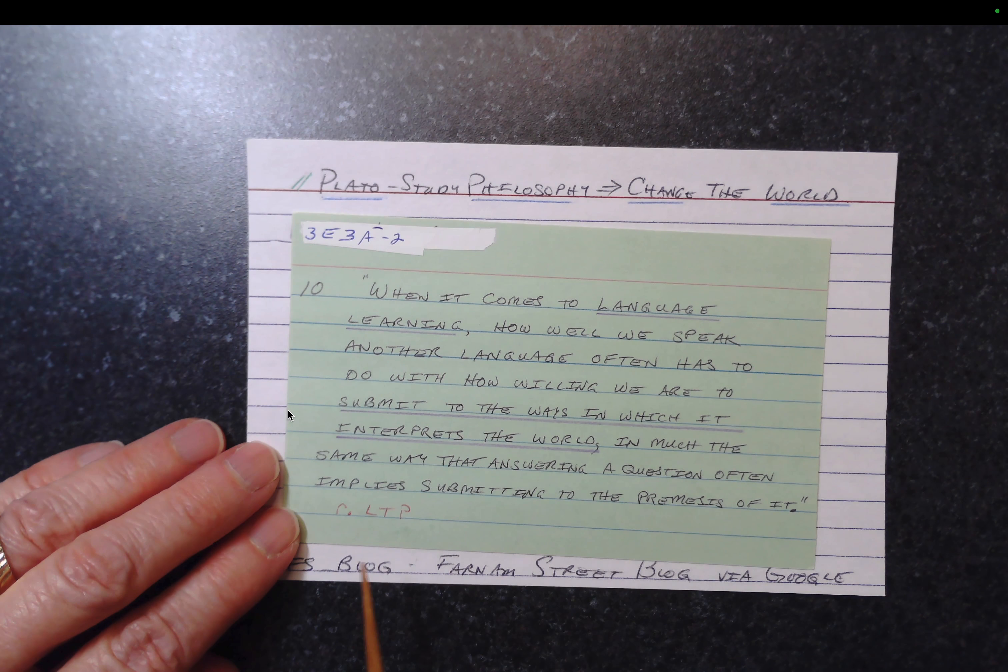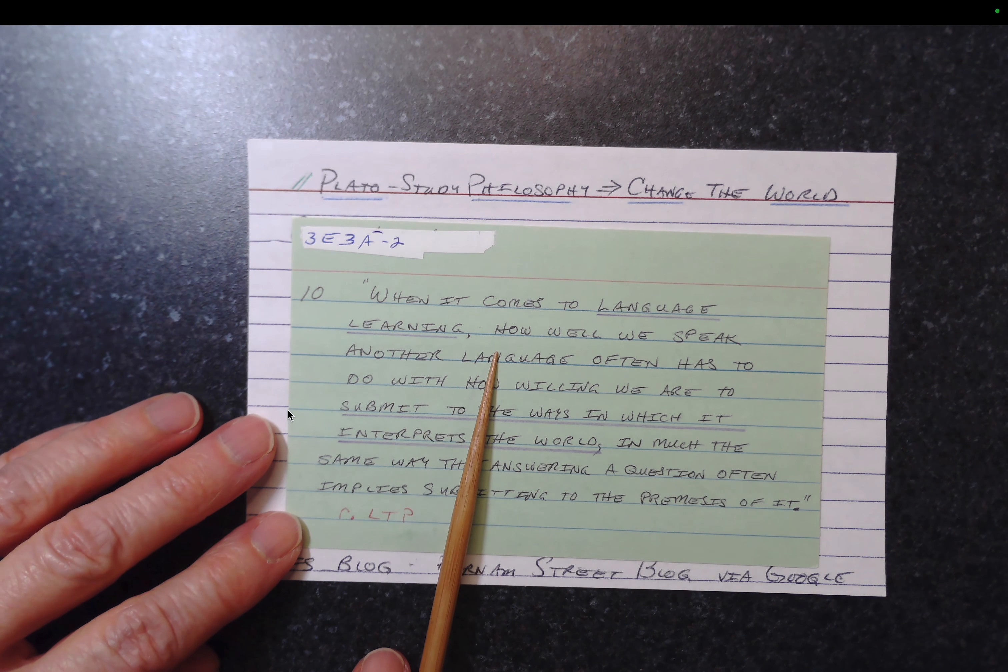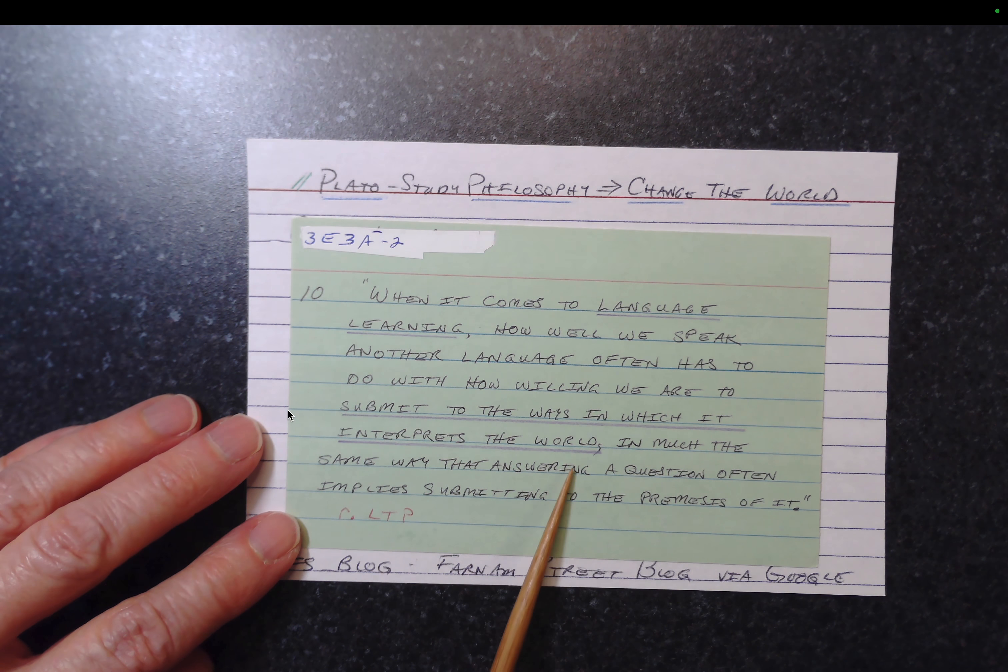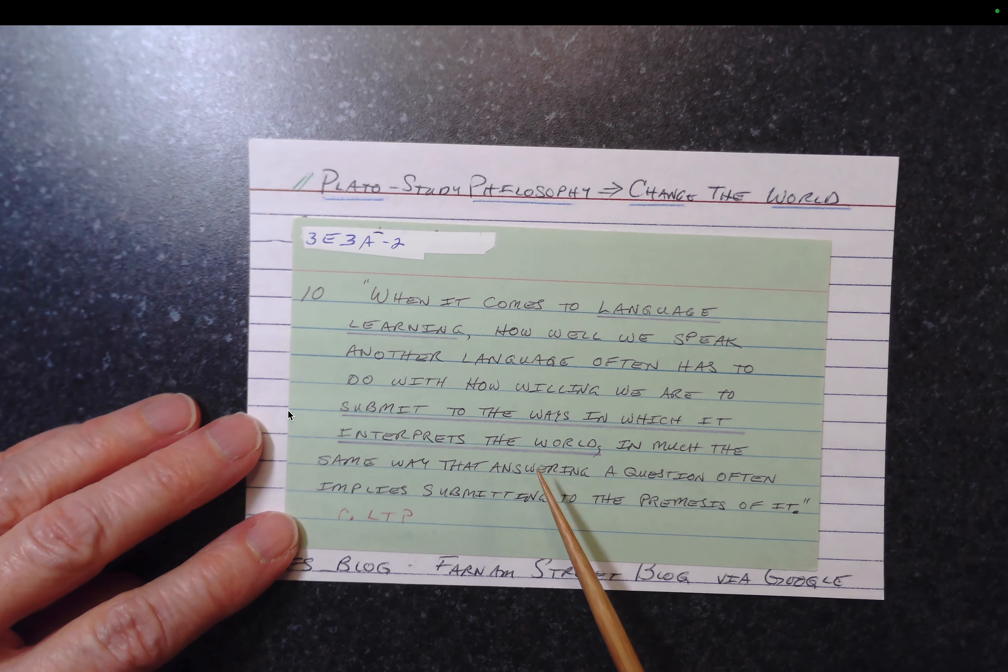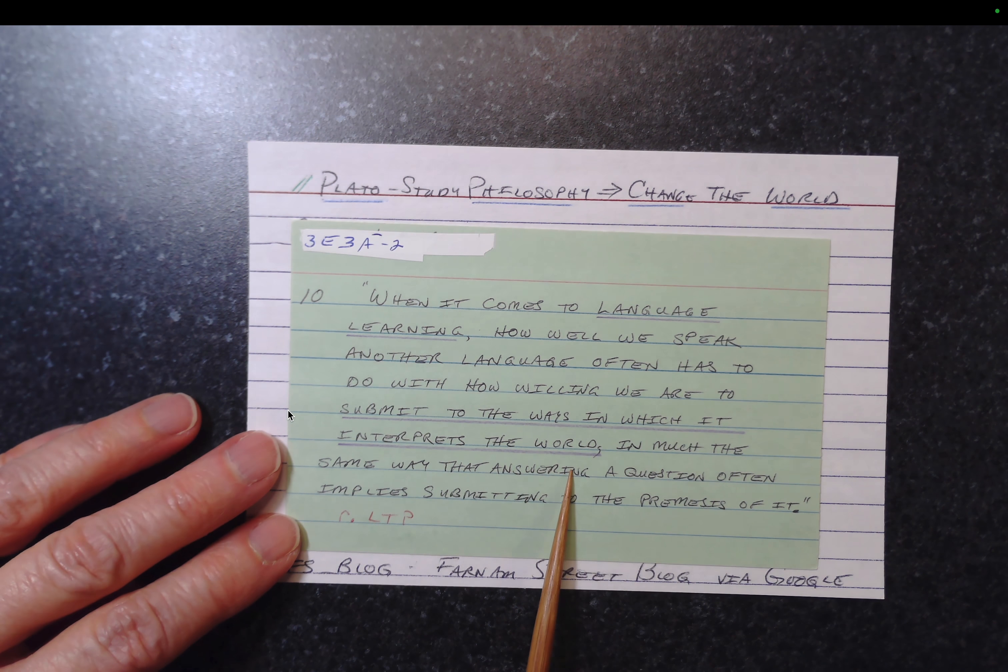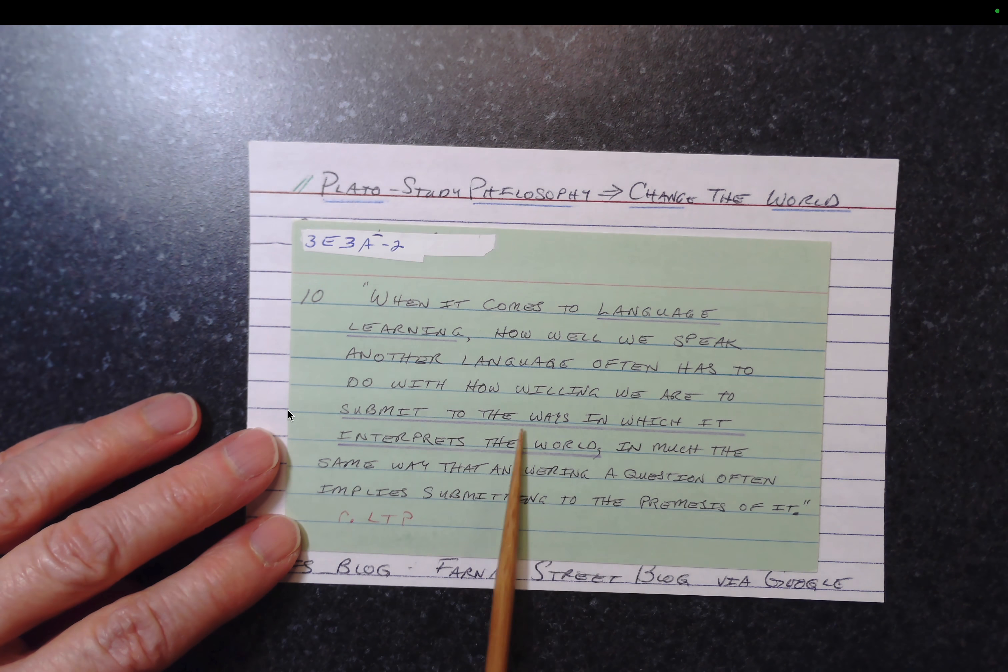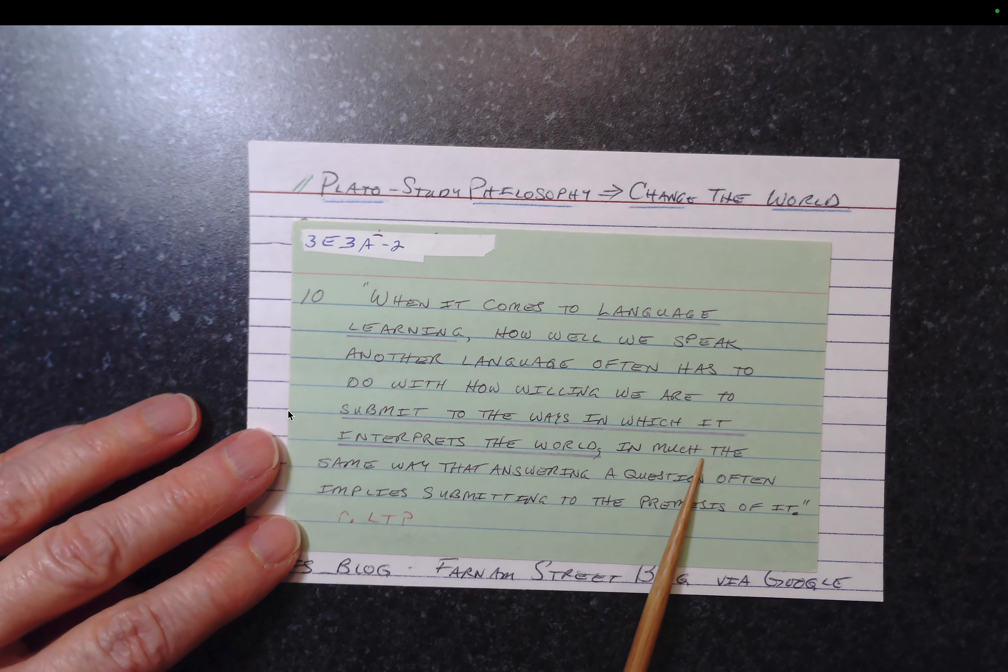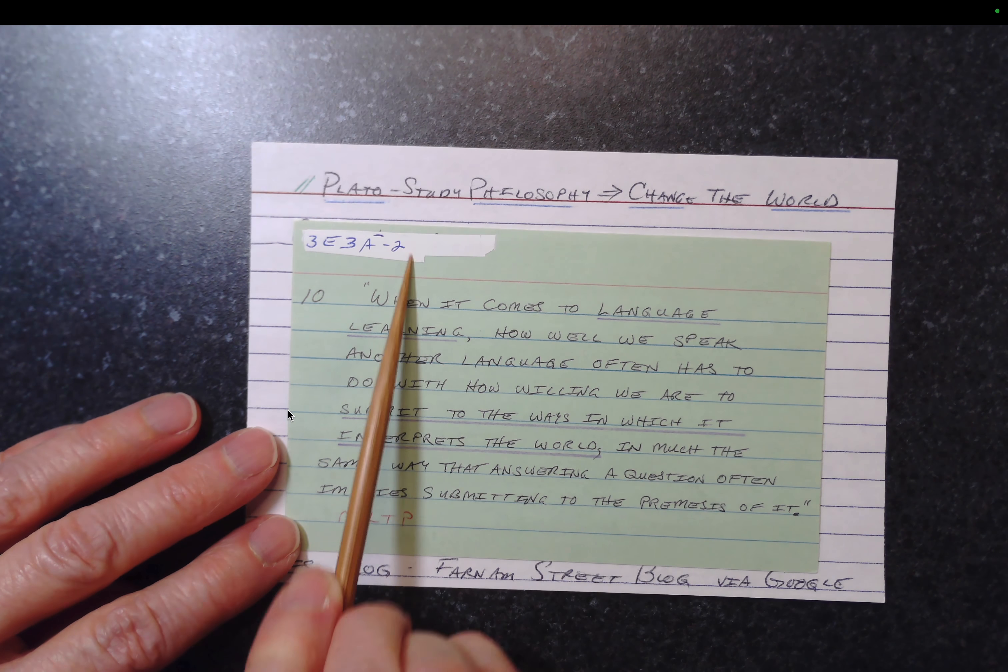I found another old card in my system. This one came from the Learning Transfer, the Language Transfer Project. And the quote is, when it comes to language learning, how well we speak another language often has to do with how willing we are to submit to the ways in which it interprets the world in much the same way that answering a question often implies submitting to the premises of it. So if we're talking about how we interpret the world, that was as close as I could come to changing the world. So I'm going to make this card the parent for the new Plato card. And we can really think about it. This again is an older card that doesn't have a tagline, but it is in the index and has something close to a tagline with these underlying words. When I pull this out, I'll be able to see what its tagline is from the index, and I'll supply it at the top of the card. So I've got this card. It's going to have its number.